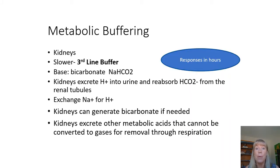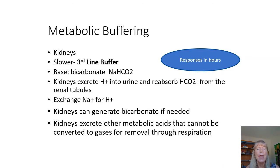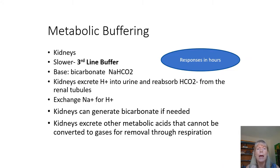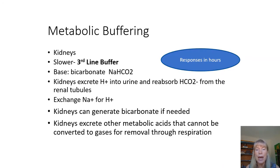The next buffer is our metabolic buffer — these are our kidneys. It's a slower buffer; it takes hours to sometimes days to fully work. When we think of a base, we think of bicarbonate, and the kidneys help to control bicarb. They can actually produce bicarb if we need more buffer, excrete hydrogen ion (which is an acid) in the urine, reabsorb bicarb, and also excrete other metabolic acids that can lead to an acidosis.